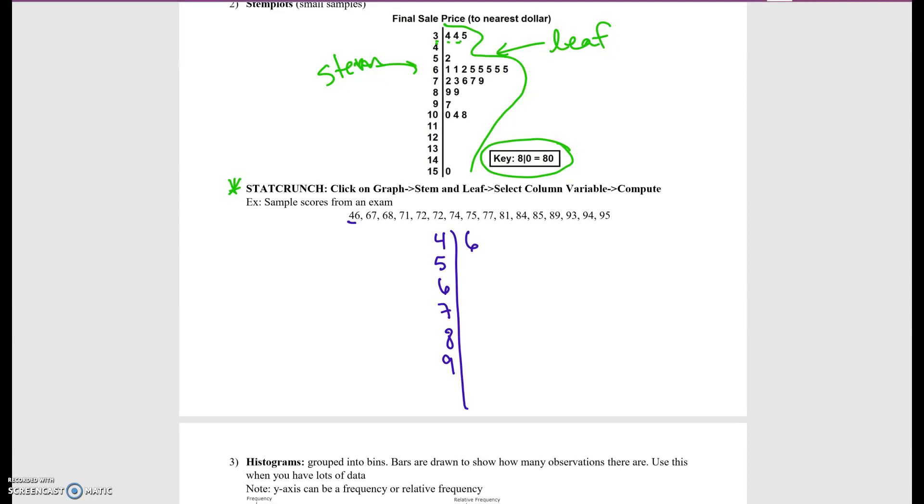For the 60s, we have a 67. We also have a 68. For the 70s, we have a 71, a 72. When we have a 72, we're just going to do it twice because we have two of them. We have a 74, a 75, and a 77. For the 80s, we're going to have an 81, an 84, an 85, and an 89. And for the 90s, a 93, a 94, and a 95.